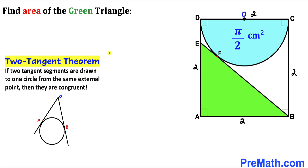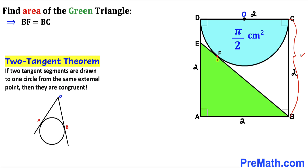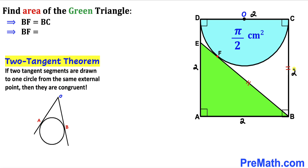Now let's recall the two-tangent theorem: if two tangent segments are drawn to one circle from the same external point, they are congruent. In our case, line segment BC is congruent to line segment BF since they are both tangent to the same circle. Therefore BF = BC = 2 centimeters.